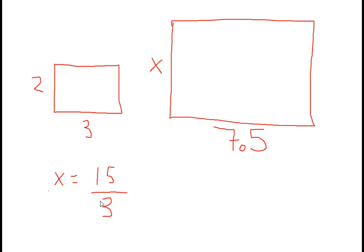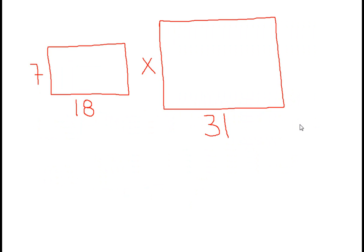This is a long division problem. We divide 3 into 15, and, bada bing, we get 5. So, if this length is 2, this length is 3, a proportional flag would have this as 5, and this at 7.5. Let's take a look at another example.